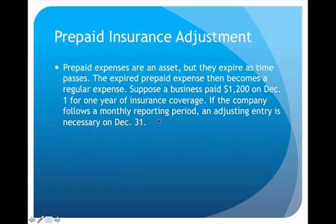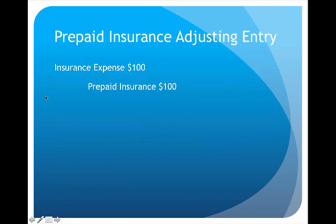The company follows a monthly reporting period, so an adjusting entry is necessary on December 31st. The way prepaid expenses work is that initially they are an asset, but as time passes, it begins to expire and that asset turns into an expense. They paid $1,200 for one year, or 12 months of coverage. So $1,200 divided by 12 works out to $100 per month, requiring a $100 adjustment.